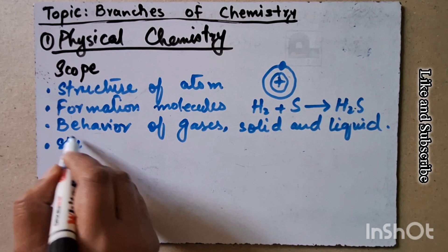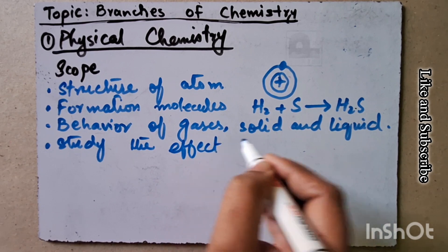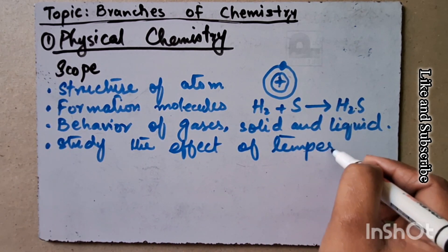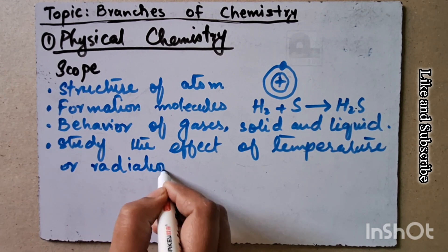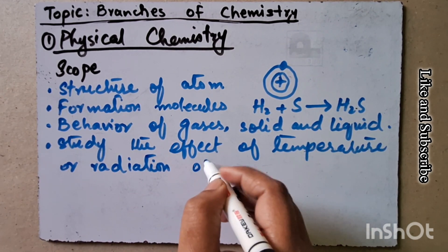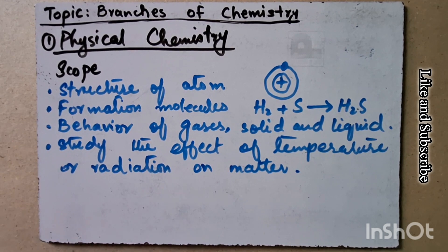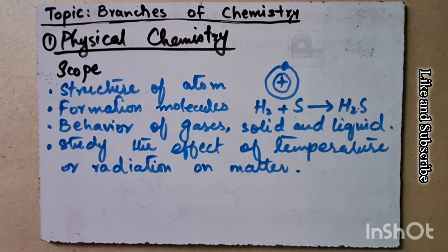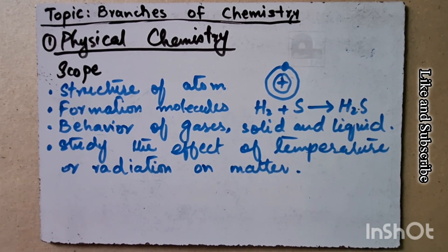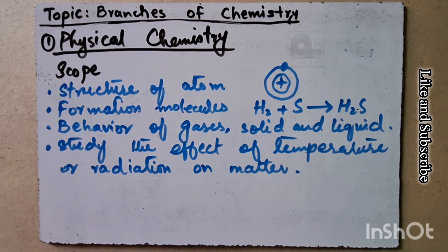Number four is the study of the effect of temperature and radiation on matter. For example, if there is solid ice, when we heat it at high temperature it will melt. When we heat it further at high temperature, it will be converted into gases. So we study all this in physical chemistry.